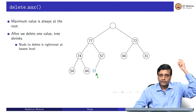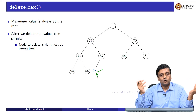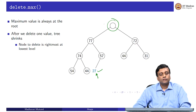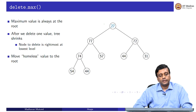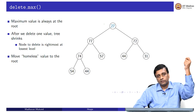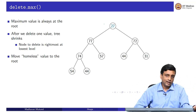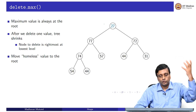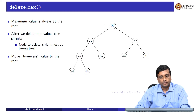The solution: take the last element (the 'homeless' value from the removed last node) and place it at the root (the empty 'home'). After removing the root as delete max, we move the last element to the root. But now it is likely smaller than its children — for example, 27 placed at the root is smaller than both children — so we need to fix this.